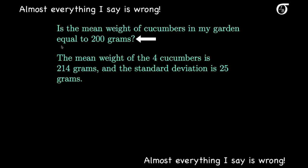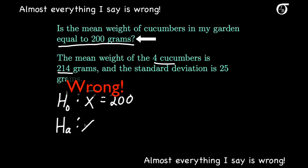Here we want to know if the mean weight of cucumbers in my garden is equal to 200 grams, and so we are going to test the null hypothesis that the mean weight is equal to 200 grams. What should we use for an alternative hypothesis? Well, as per usual we have three options: greater than, less than, or not equal to. But here the mean weight of the 4 cucumbers in the garden is 214 grams, which is greater than 200 grams. And so if this sample gives us any evidence against the null hypothesis, it's going to be that the mean is greater than 200 grams. So that will be our alternative hypothesis.